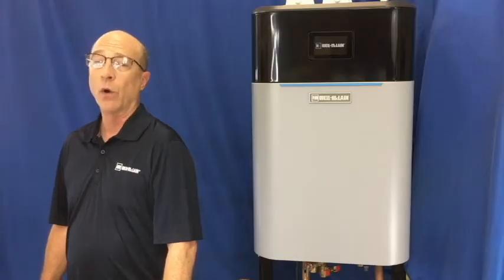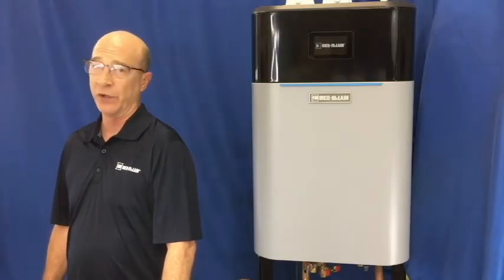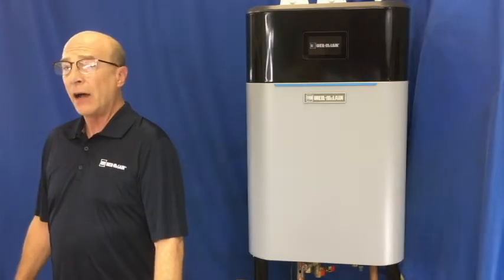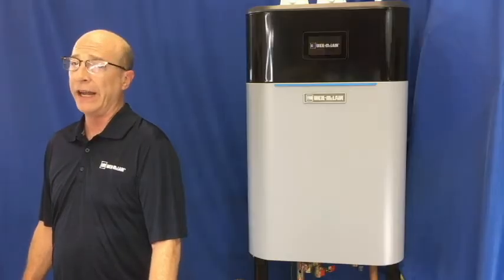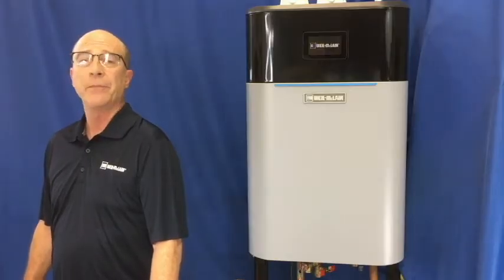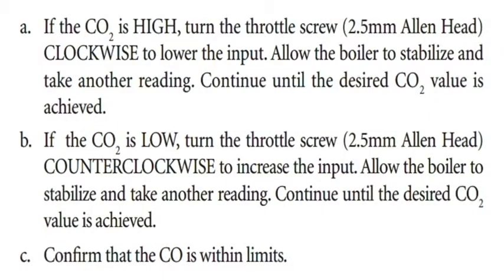The boiler will ramp up to its high fire setting. Now, observe the CO2 reading on the analyzer. If the CO2 is low, turn the throttle screw counter-clockwise. If it's high, go clockwise.